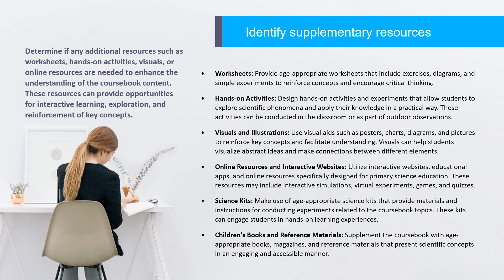Online resources and interactive websites: Utilize interactive websites, educational apps, and online resources specifically designed for primary science education — these may include interactive simulations, virtual experiments, games, and quizzes. Science kits: Make use of age-appropriate science kits that provide materials and instructions for conducting experiments related to the coursebook topics, engaging students in hands-on learning experiences. Children's books and reference materials: Supplement the coursebook with age-appropriate books, magazines, and reference materials that present scientific concepts in an engaging and accessible manner. The selection of resources should be based on the specific topics covered, the level of the students, and the availability of materials.